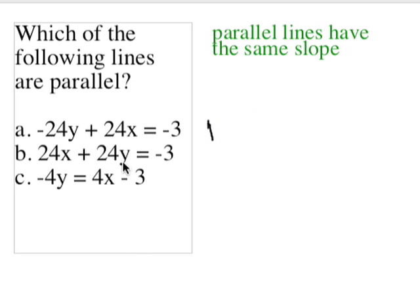In b, I do pretty much the same thing, except I'm dividing by 24 instead of a negative 24. So this becomes negative 24 divided by 24. That's going to be a slope of negative 1.